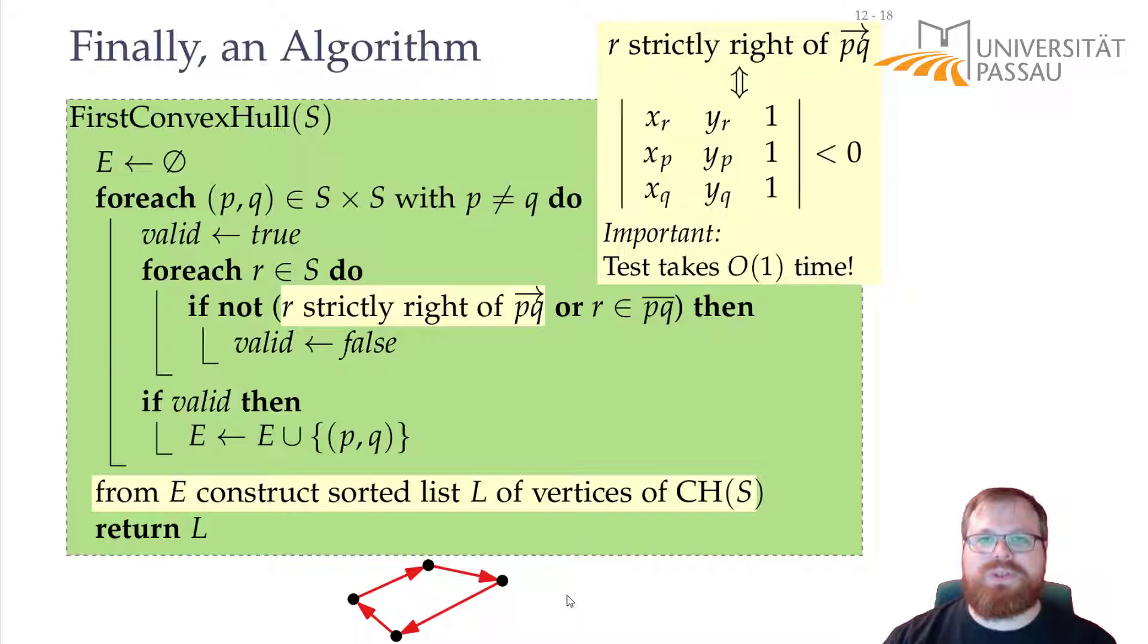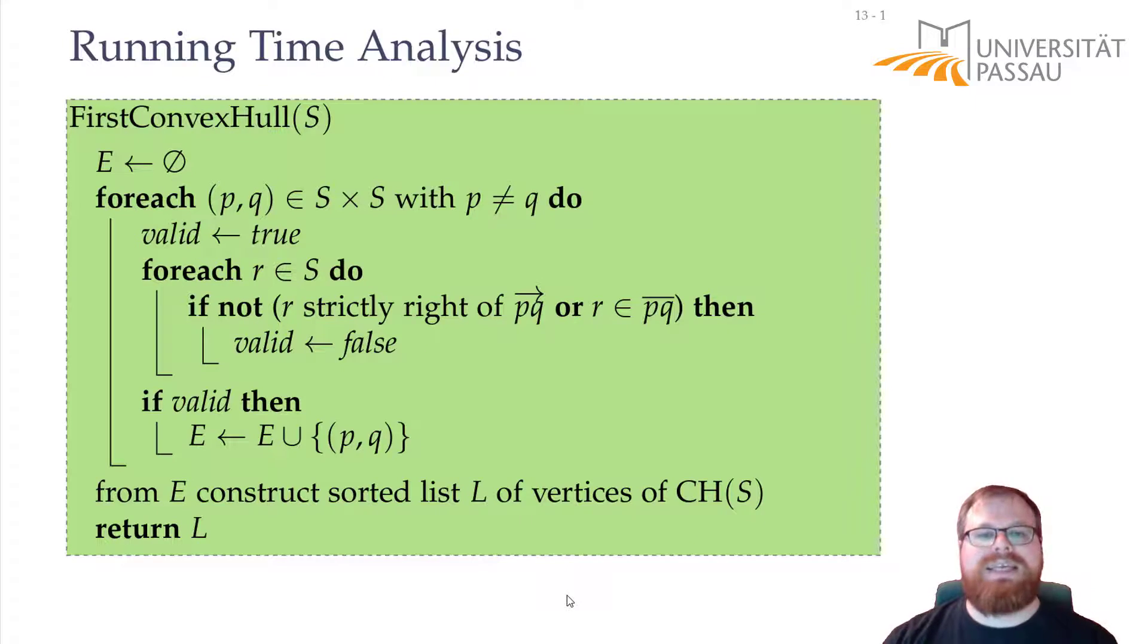This is the complete description of the algorithm that we can use to find the convex hull of a point set. But we still have to analyze the runtime of the algorithm. What are the key components for the running time here?